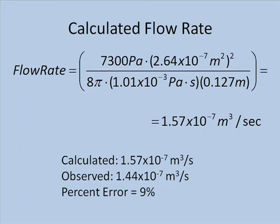The flow rate will be equal to the pressure of 7,300 pascals times the cross-sectional area squared, and this product divided by 8π, divided by the viscosity, divided by the length of the capillary. This gives a predicted flow rate of 1.57 × 10⁻⁷ cubic meters per second.